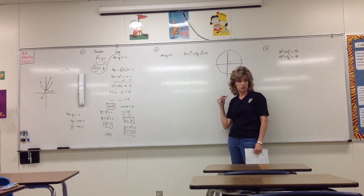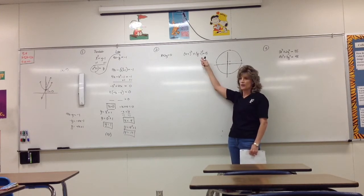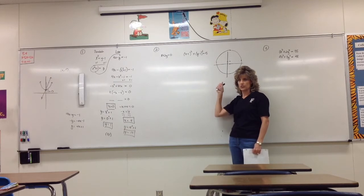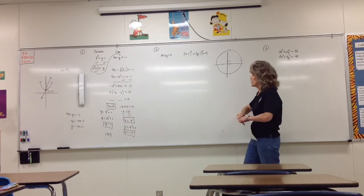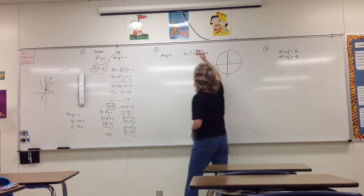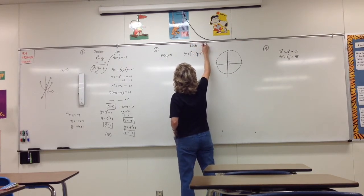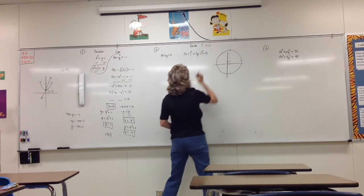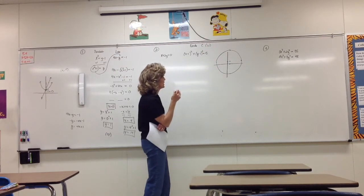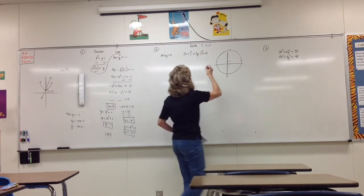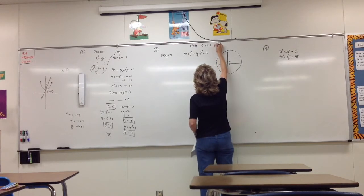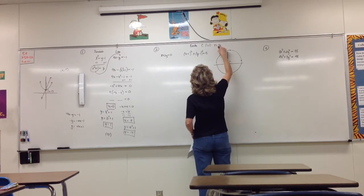This is a circle, but it's not centered at (0, 0). The (x minus one) causes it to shift right one, and (y minus one) shifts it up one. So this is a circle centered at (1, 1) with radius equal to the square root of five.